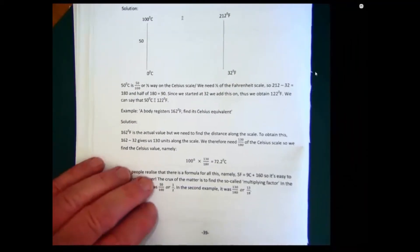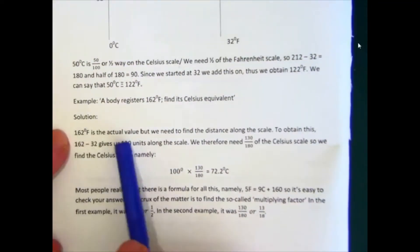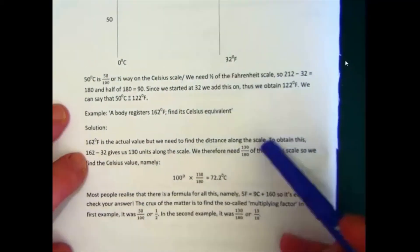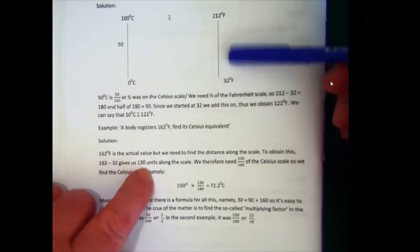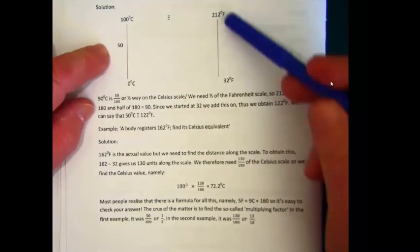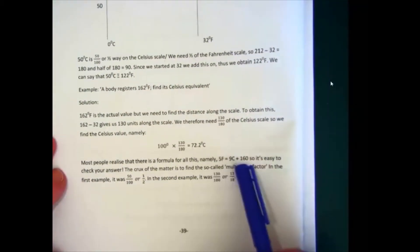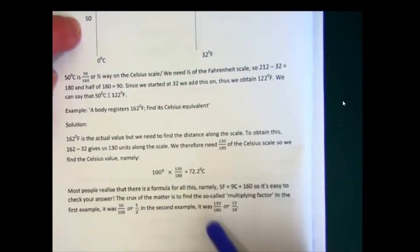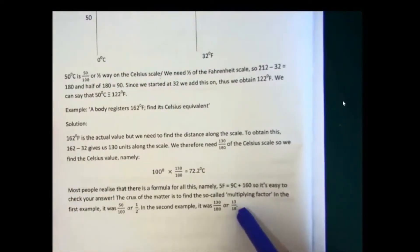Let's have a look at the next one. A body registers 162 Fahrenheit, find the equivalent in Celsius. So here's a solution. Now 162 is the actual value, we need to find the distance. So if we take 32 away, then I get 130 on the scale. So we need 130 out of the 180. That's a proportion. There's 180 units there, but we've just found that we only need 130. So we multiply the 100 by this fraction to give me 72.2 degrees. Most people realize that there's a formula for this. This is a formula. So you can easily check your answer. But the crux of the matter is to find the so-called multiplying factor. So in the first example, I gave you 50. So it's 50 out of 100, the whole length, which is a half. Notice in the second example, it's 130 out of 180. We're comparing the distances or 13 18ths. And that's what you'll need to deal with.